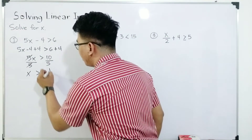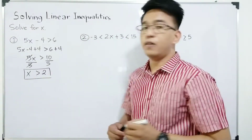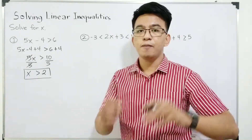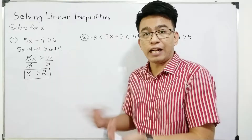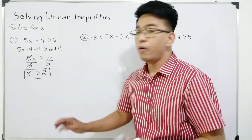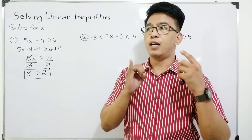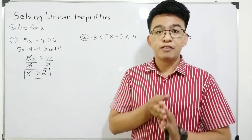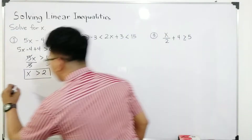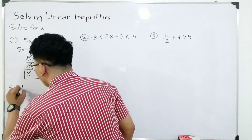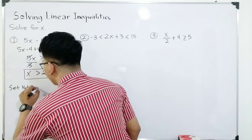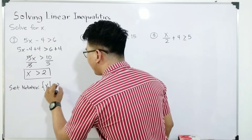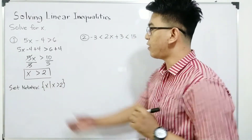So what is the meaning of this? This is our inequality solution. When you read this, x is greater than 2 — meaning the possible values of x are the numbers greater than 2. So this is our answer. But we can also represent our answer using set notation, interval notation, and graphical method. For the set notation, the answer is: x such that x is greater than 2. It's that simple.